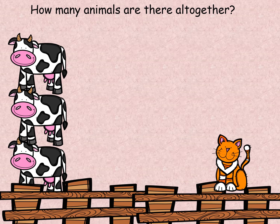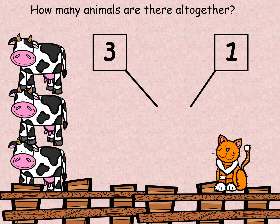How many animals are there all together? Let's see. Starting at the cows. One, two, three — there are three cows. And how many cats are there? You're right, there is only one cat. So we've got three cows and one cat.